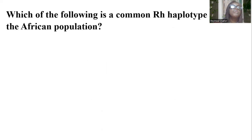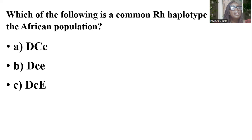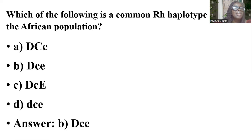Which of the following is the most common RH phenotype in the African population? We have options A, B, C, and D. And the answer is B.